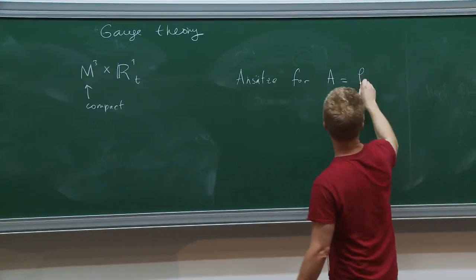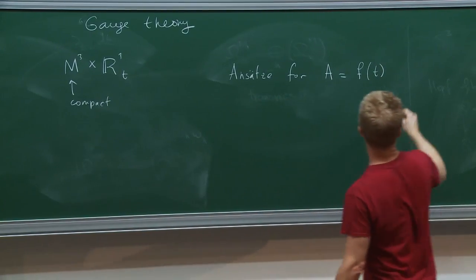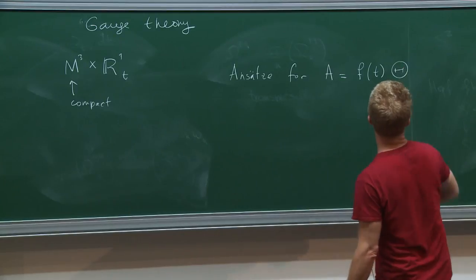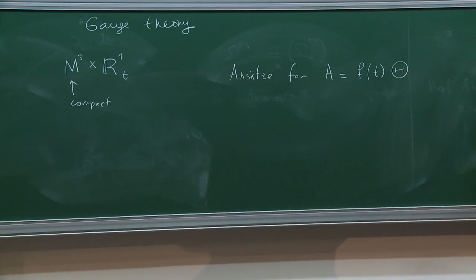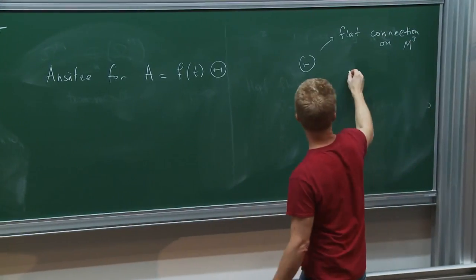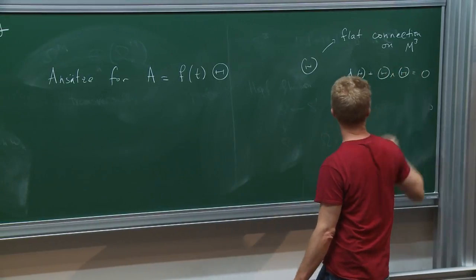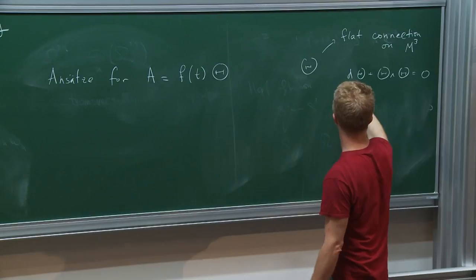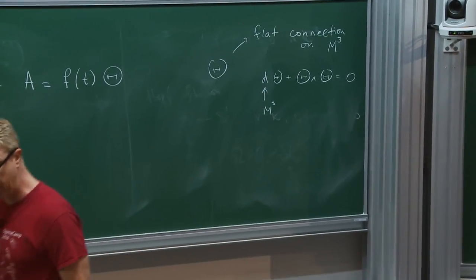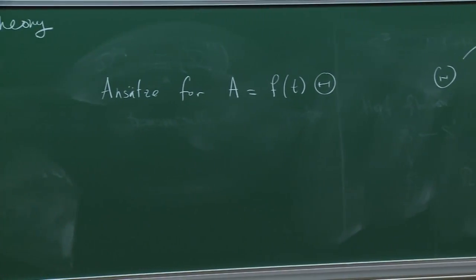The ansatz is of the following simple form: it's going to be some function of time — time is the coordinate on the real line — times a connection. So theta is going to be a flat connection on M3, meaning it solves the flatness equation. Theta does not depend on time; the time dependence is in the scale factor f.